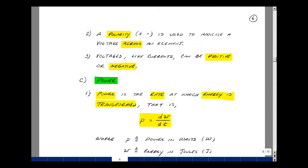Voltage has a polarity, and we use a plus and minus to indicate that. Voltages, like currents, can be positive or negative.